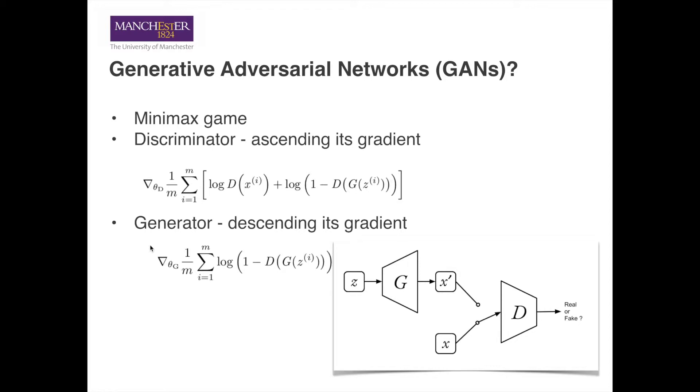The objective of the generator is quite similar. For the generator, we want it to generate data that is indistinguishable from the real ones. In other words, the generated data should be predicted as real with probability close to 1.